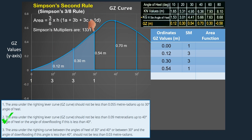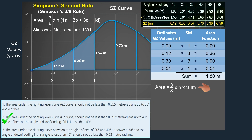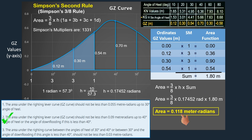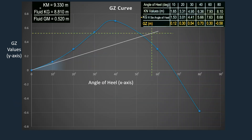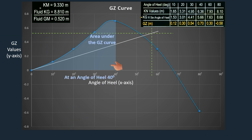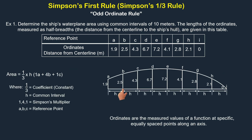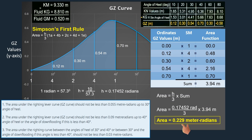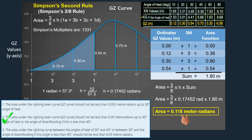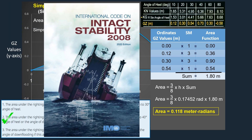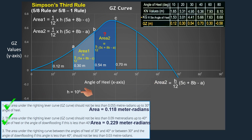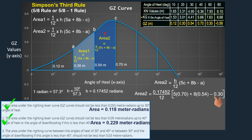Simpson's Rule is a numerical method used to approximate the area under a curve, which is particularly useful for calculating integrals. It is widely used in ship stability and hydrostatics for determining areas, volumes, and centroids. In today's video, we will use Simpson's Rule to calculate the waterplane area and area under the curve of statical stability. This is necessary to verify whether a ship's proposed loaded condition complies with the stability criteria laid down by IMO. We will use a simple method to calculate areas under the curve without resorting to integration techniques.